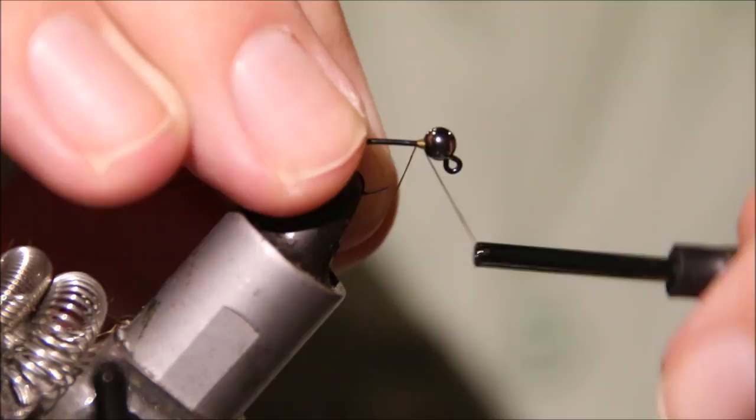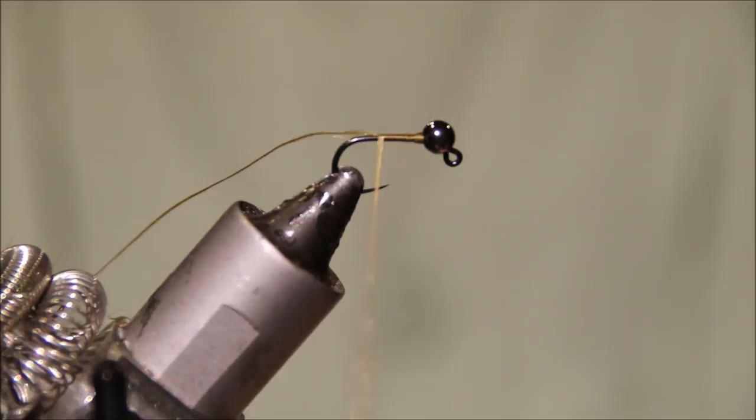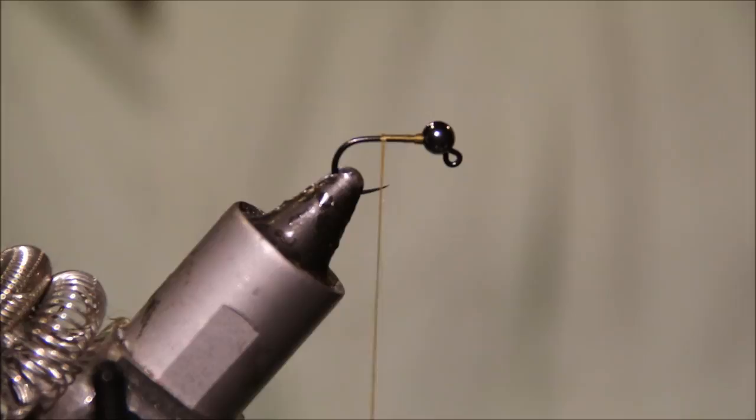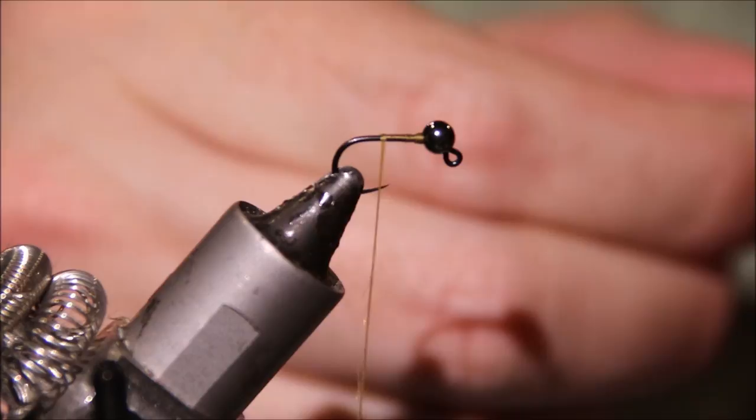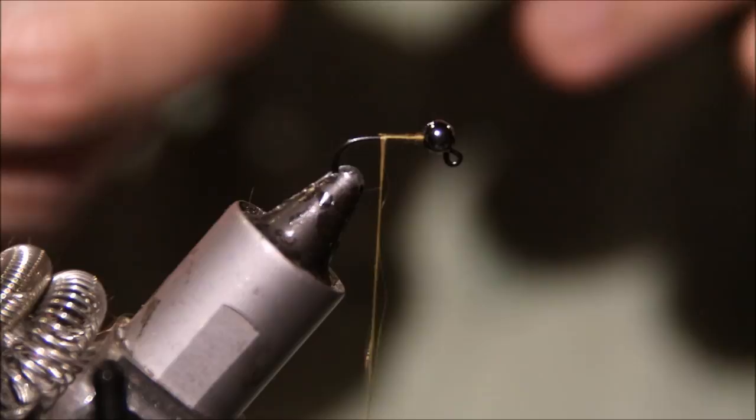I'm just going to wind on some 6-aught olive thread. Obviously you could go to 3.8 if you wish, maybe down to 3, and tie them in different weights. I'm using a black bead for this because I want it to blend slightly with the darker dubbing and the hotspot.